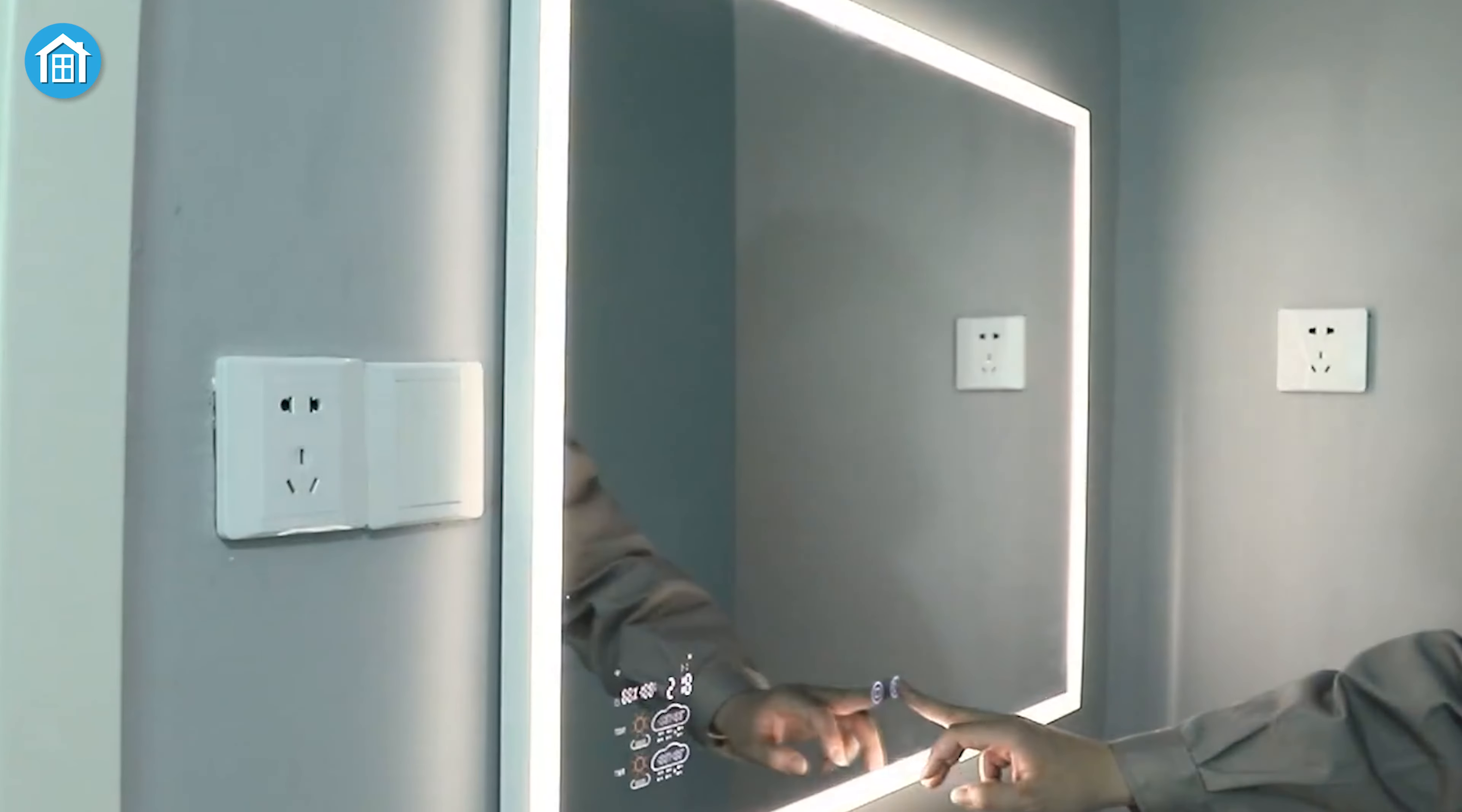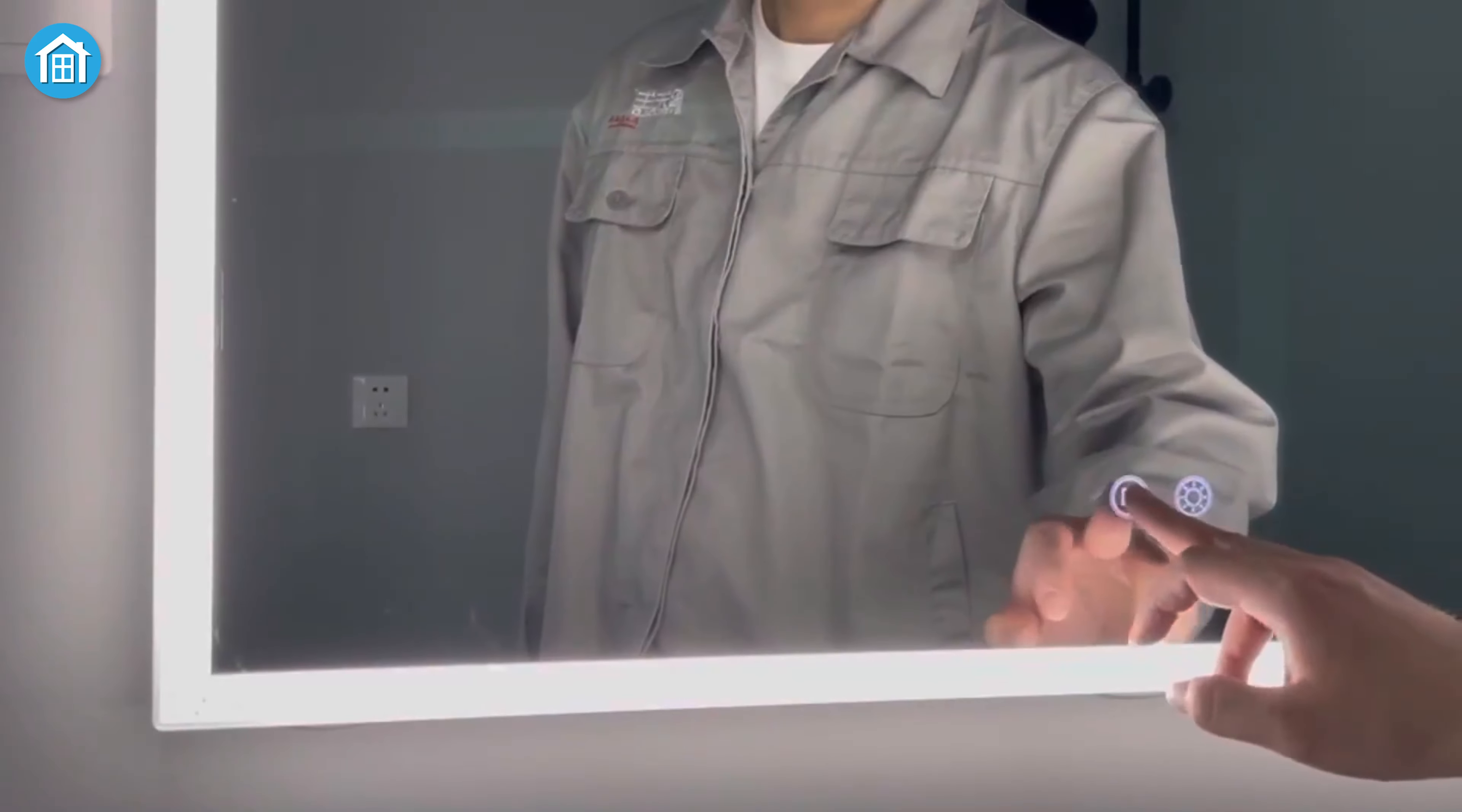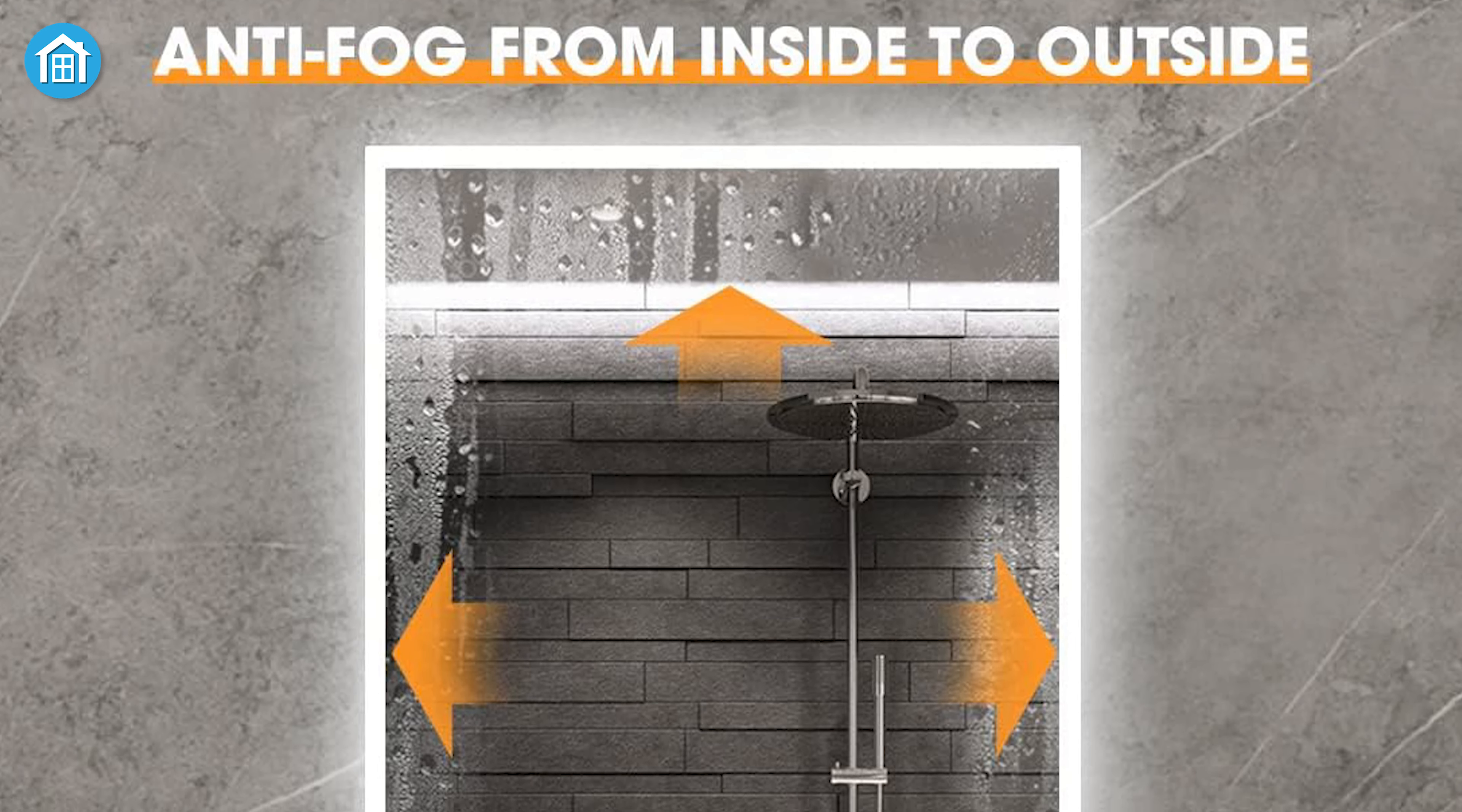The dimmable feature, controlled by a long press, allows you to set the perfect ambience, while its memory function ensures your settings are saved for next time. Start your day informed with the weather forecast feature, connecting seamlessly to your home network for real-time updates. The anti-fog function keeps your reflection crystal clear.